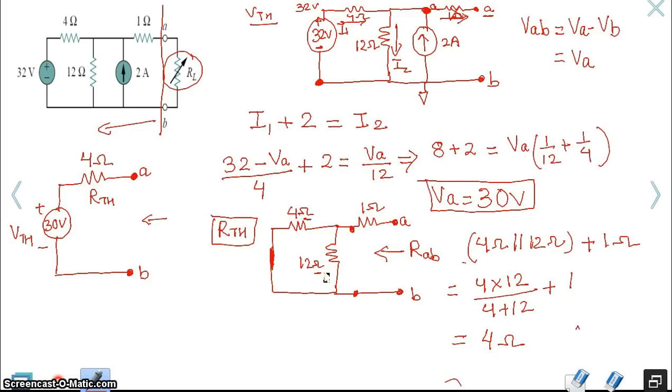So, the circuit that's shown here, the original circuit that's shown here, the left hand side of terminal AB, can be represented as an equivalent circuit with a single voltage source of 30 volts, and a single resistance in series with that RTH of 4 ohms.